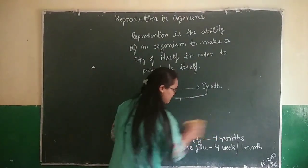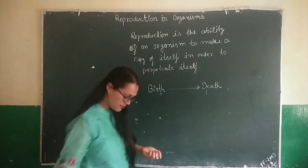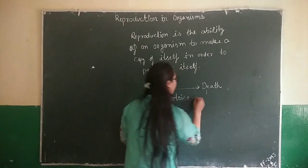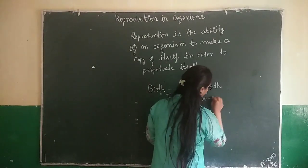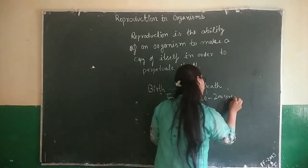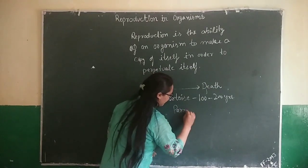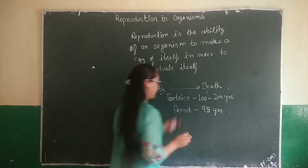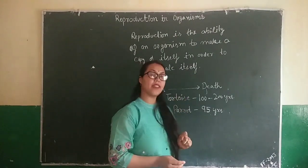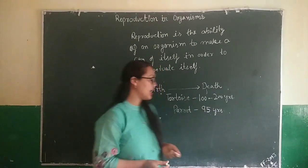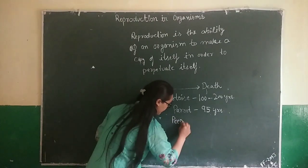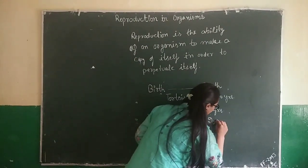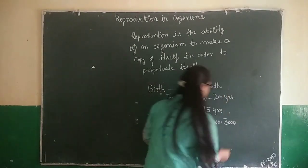Now we will talk about the life span of certain animals. For example, the tortoise has an average life span of 100 to 200 years. The parrot has a life span of 95 years. You must note that plants have longer life spans as compared to animals. For example, the peepal tree has an average life span of 2000 to 3000 years.